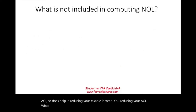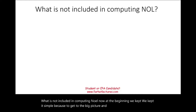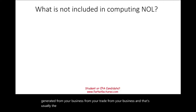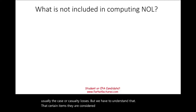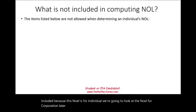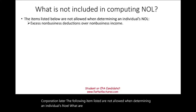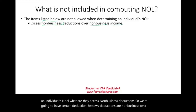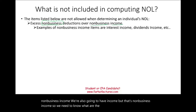What is not included in computing NOL? At the beginning, I said NOL is generated from business income and business expenses, plus casualty losses. But certain items — income or deductions — are not included when computing an individual's NOL. We need to distinguish between non-business income and non-business deductions. Non-business income includes things like interest income and dividend income — those are not business income. Rental income, however, is business income.